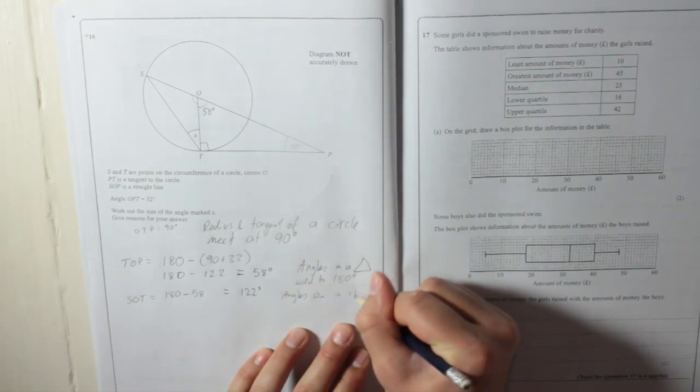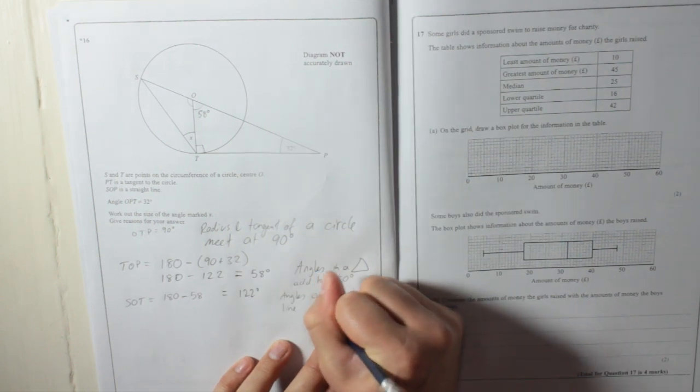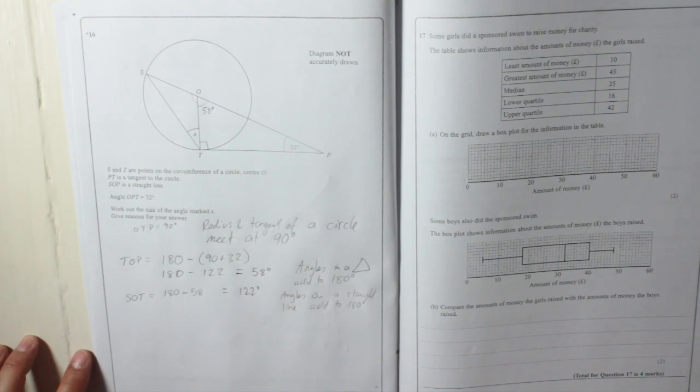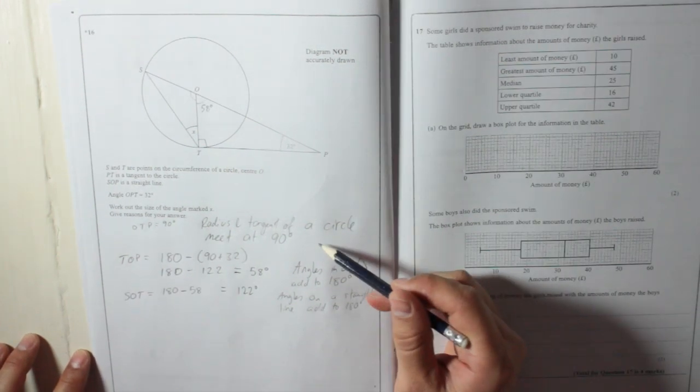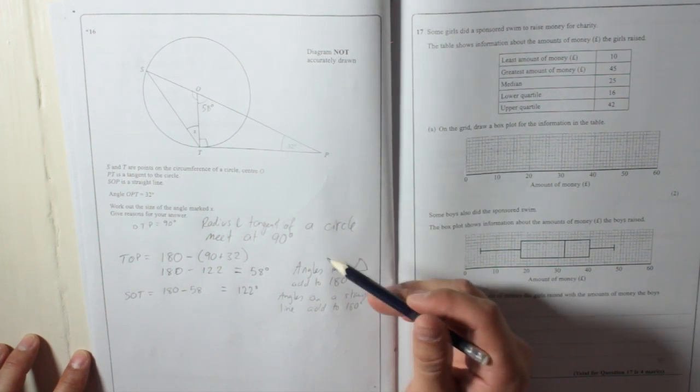Angles on a straight line add to 180 degrees. Now the mark scheme won't actually give you marks for every single one of these, but it definitely wants that one, and it usually wants one more. So the best thing to do is write down everything you know.